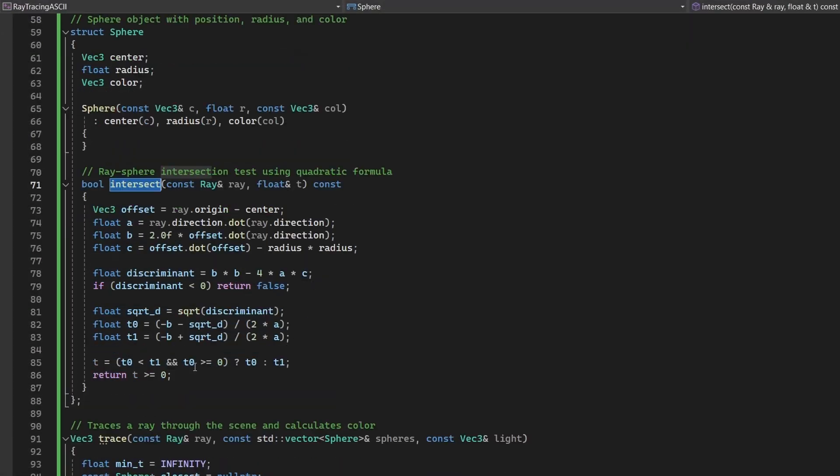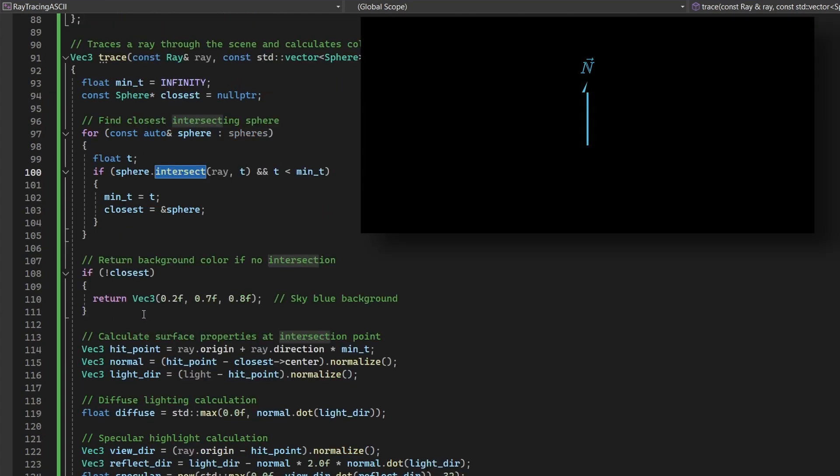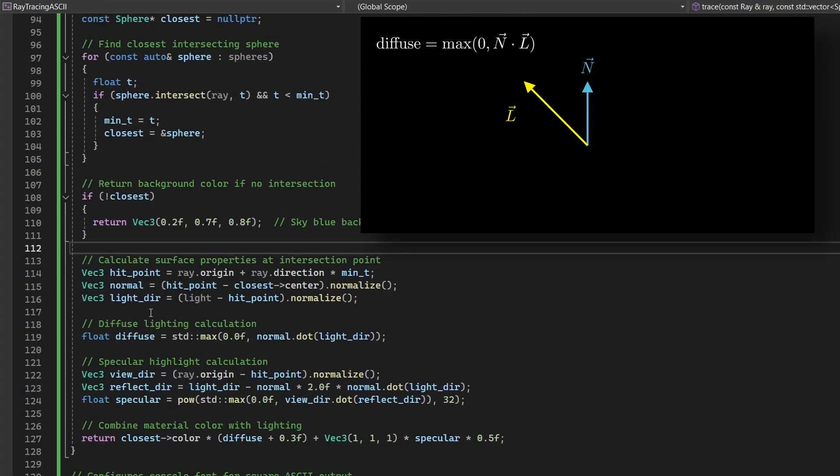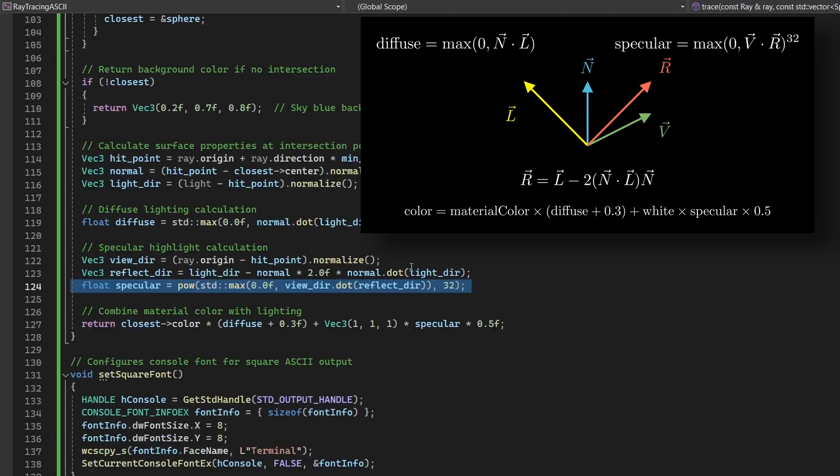The trace function is responsible for determining the color of each pixel by tracing rays through the scene. It loops through all spheres to find the closest intersection point for a given ray. If no intersection occurs, a default background color is returned. Otherwise, it calculates lighting effects at the intersection point using diffuse and specular components. Diffuse lighting is computed based on the angle between the surface normal and the light direction, while specular highlights simulate shininess by reflecting light toward the camera direction. These components are combined with the sphere's color to produce realistic shading.